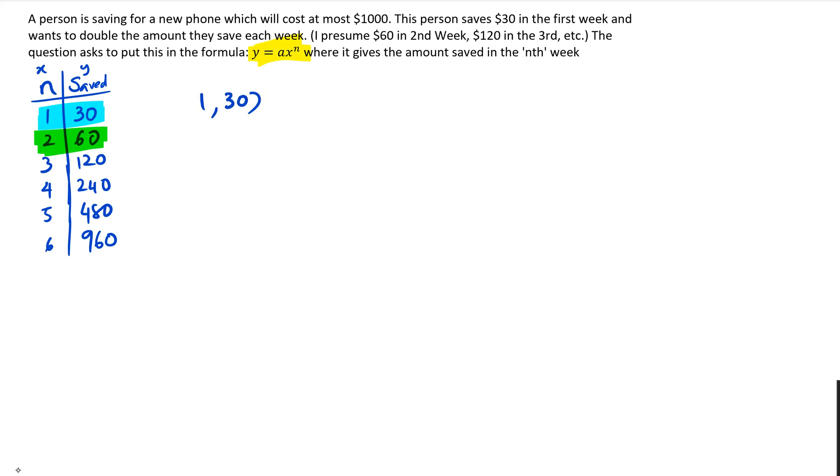So what I'm gonna do is using 1 and 30, I'm gonna come up with an equation, and then 2 and 60, I'm gonna come up with another equation. One more thing that's really useful to know is, because I'm gonna show you guys a couple of ways of doing this, the first method is by substituting this into y equals ax^n. So because we've got y equals ax^n and we know that this is xy and xy, I'm gonna actually end up with two equations.